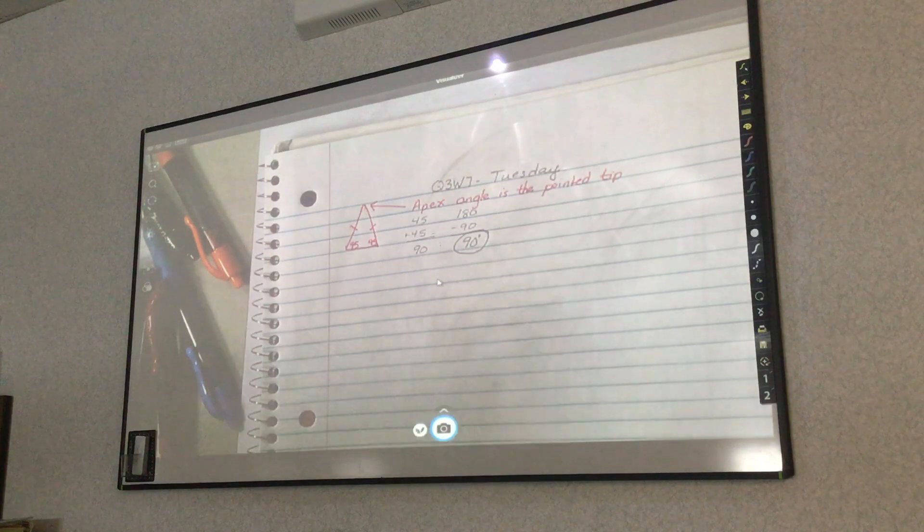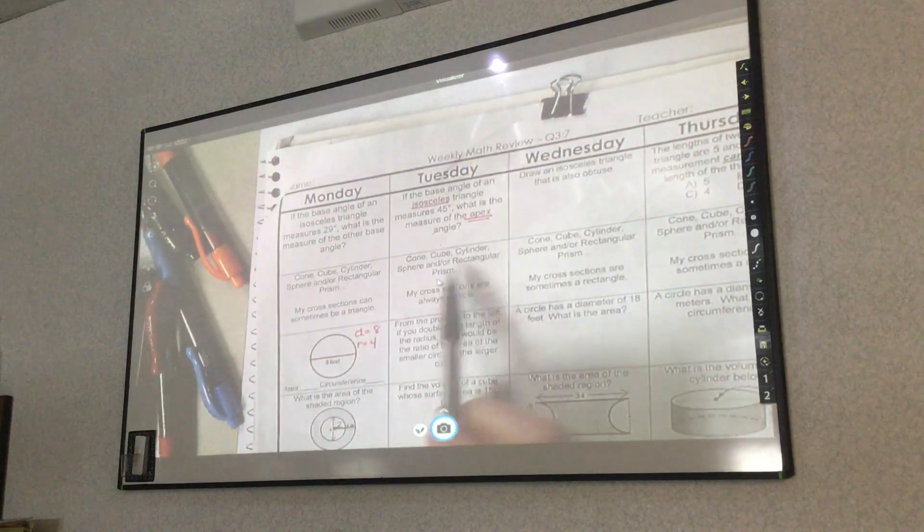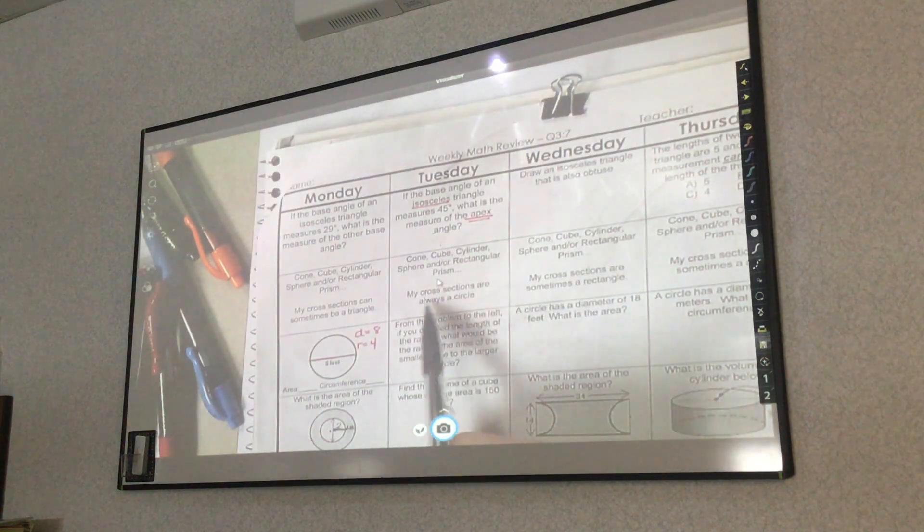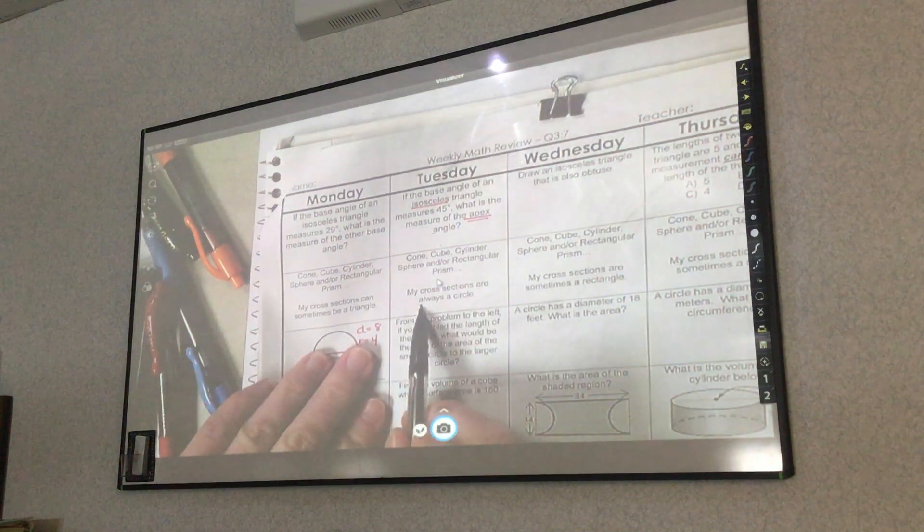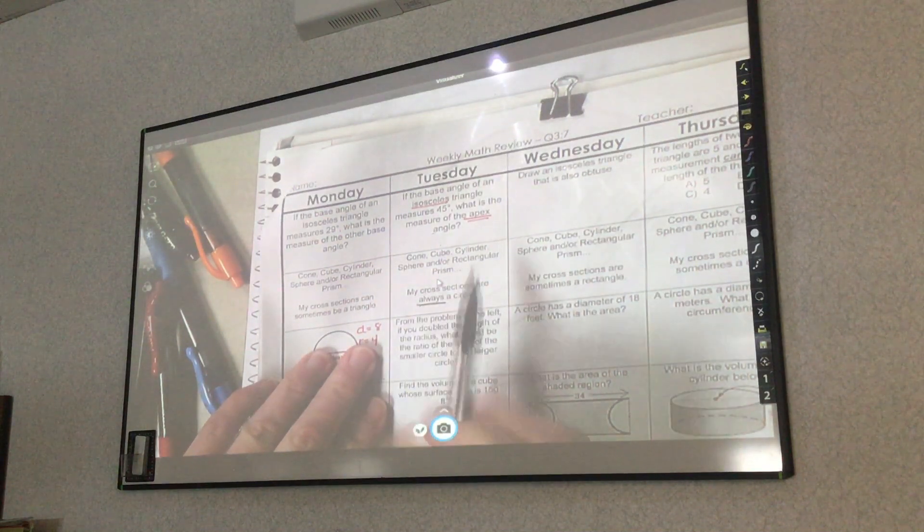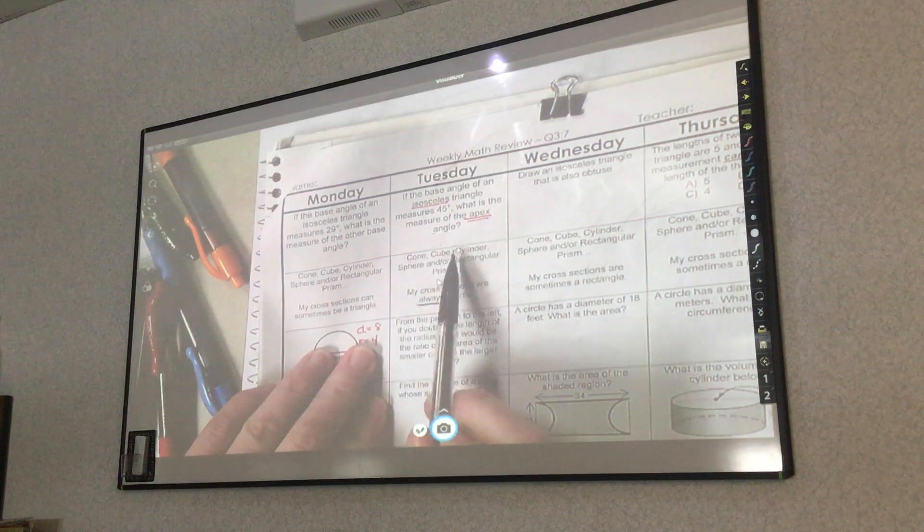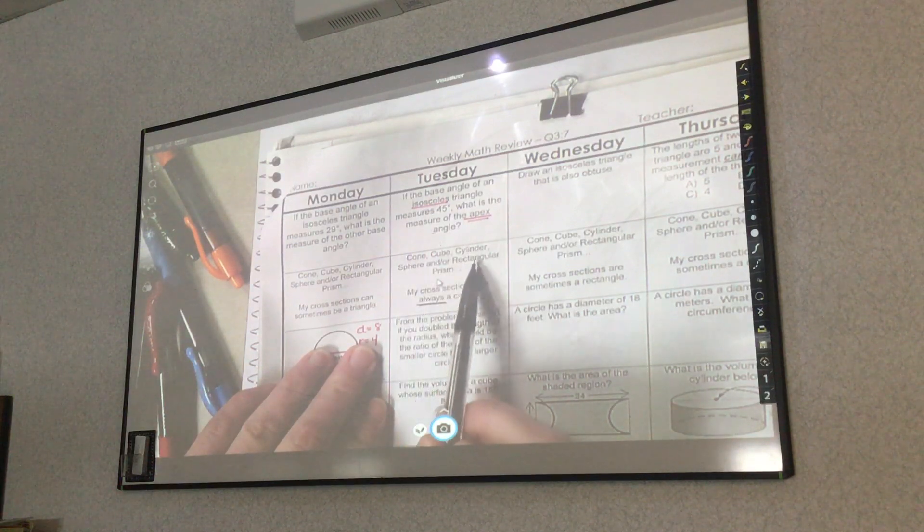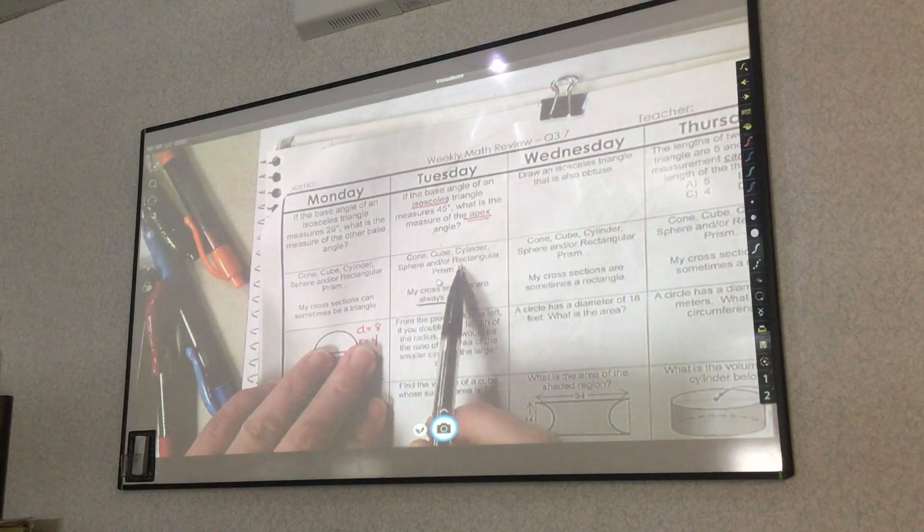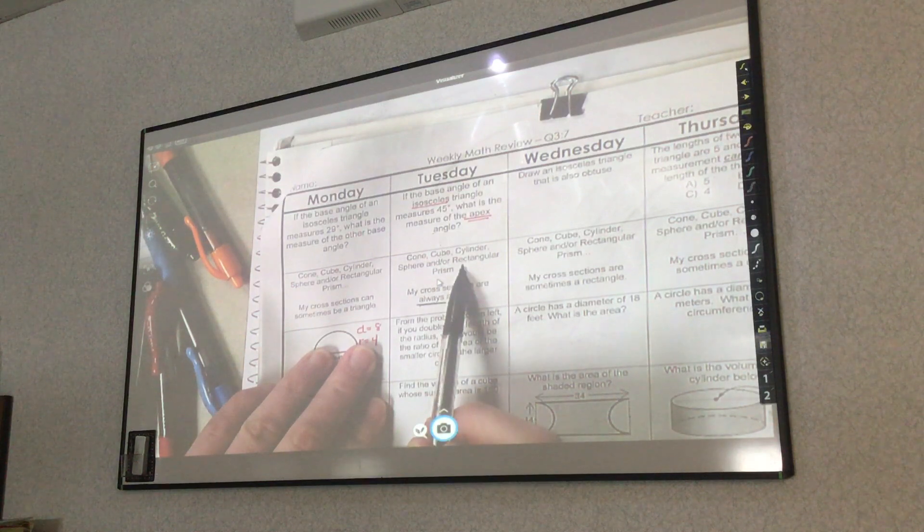Number 2, cone, cube, cylinder, sphere, and or rectangular prisms. My cross sections are always circles. Well if yesterday, the cone, the cube, and the rectangular prism could have all had triangles.